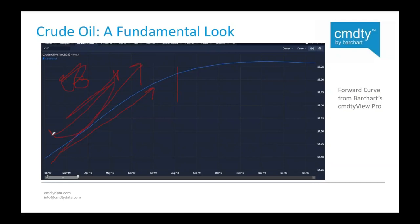Once we get to a point in the futures and cash market where the forward curve starts to flatten out, that's when we can say fundamentals are starting to change — that we've reached the price point that will start bringing buyers back in on the supply-demand side.